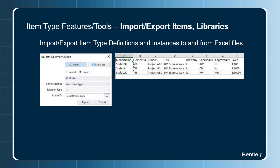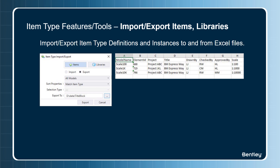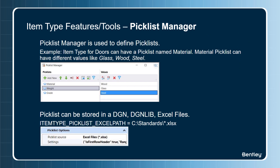In this example, we have exported the title block items attached to sheet models. We then update the changes in Excel and import it back. Imagine having to manually edit the title block information in hundreds of sheets — which makes this a powerful productivity tool. Picklist Manager is a tool where you can create and manage picklists. Picklist helps you capture accurate data inputs.